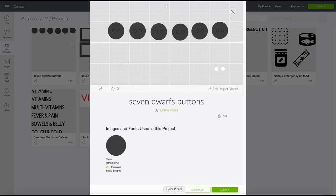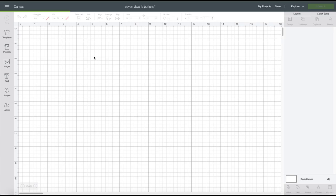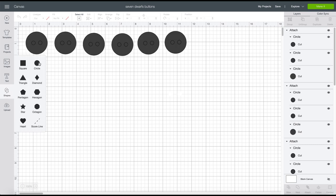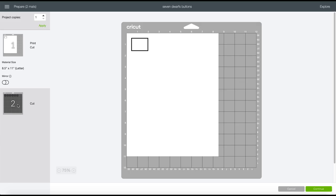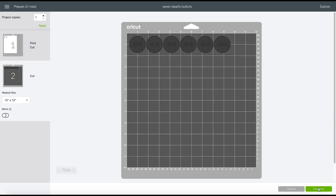The buttons: I used circles, very easy, 1½ inch circles. Go to Shapes, add a circle, then I added two smaller circles and just duplicated these. I go to Make It, I chose the material Everyday Iron-On, and I put more pressure for the machine to cut it.